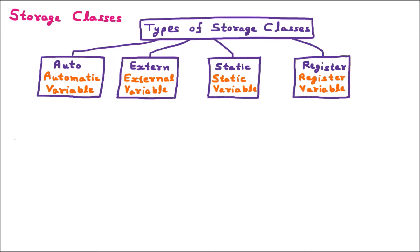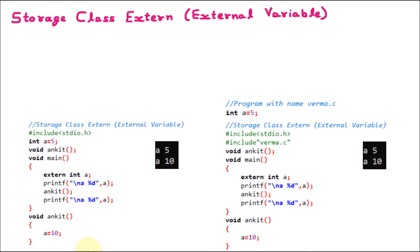Now we are learning the storage class extern, or the external variable. If we talk about the types of storage classes, there are four types. The first is storage class auto or the automatic variable. The second is storage class extern or the external variable. Third is storage class static or the static variable. And fourth is storage class register or the register variable. Now we are discussing the second type, extern or the external variable, also called external storage class.